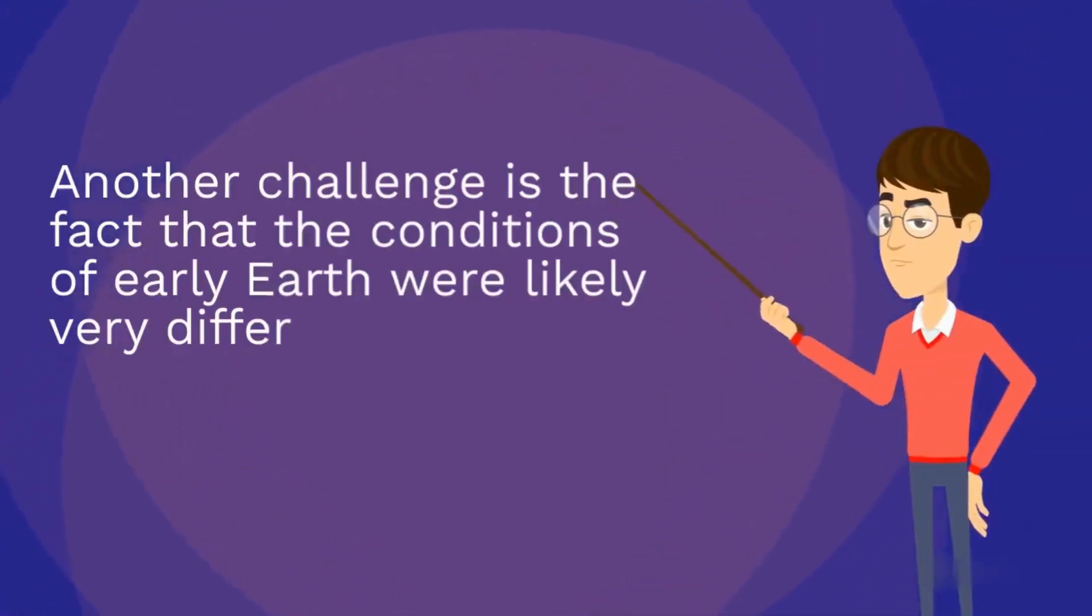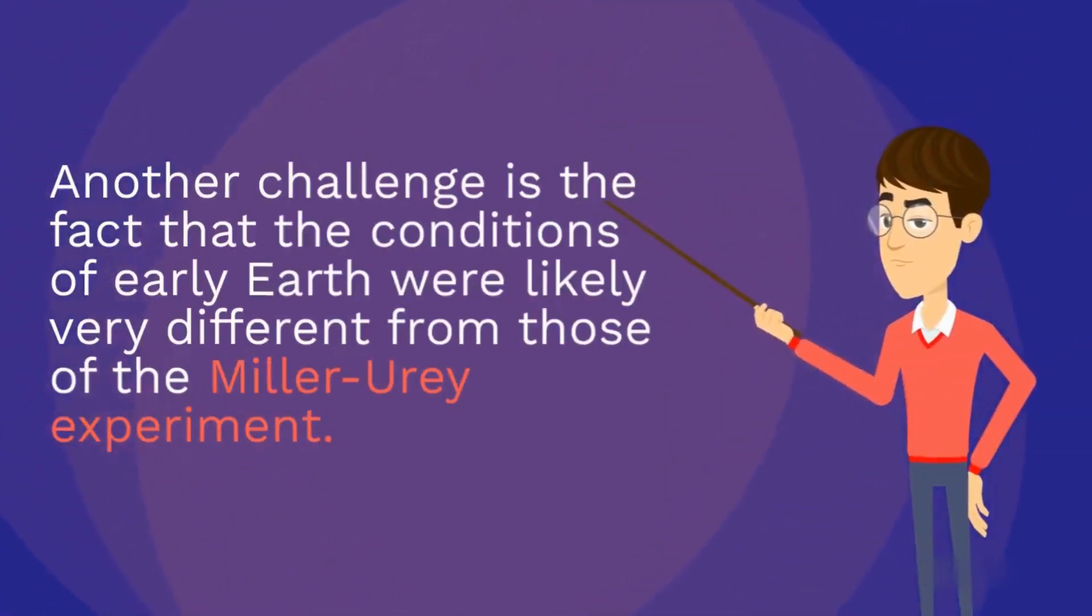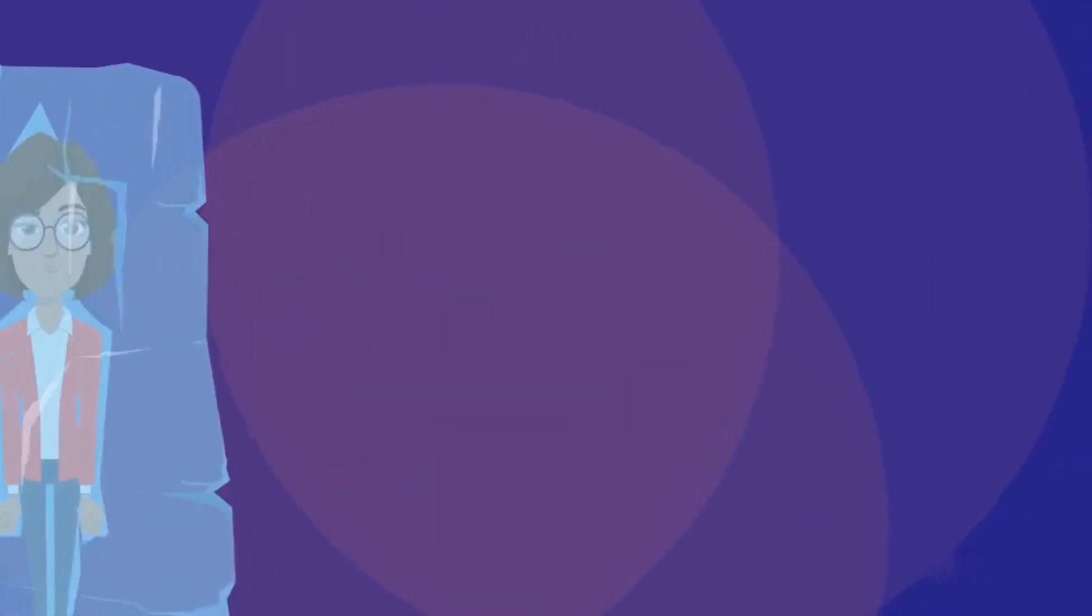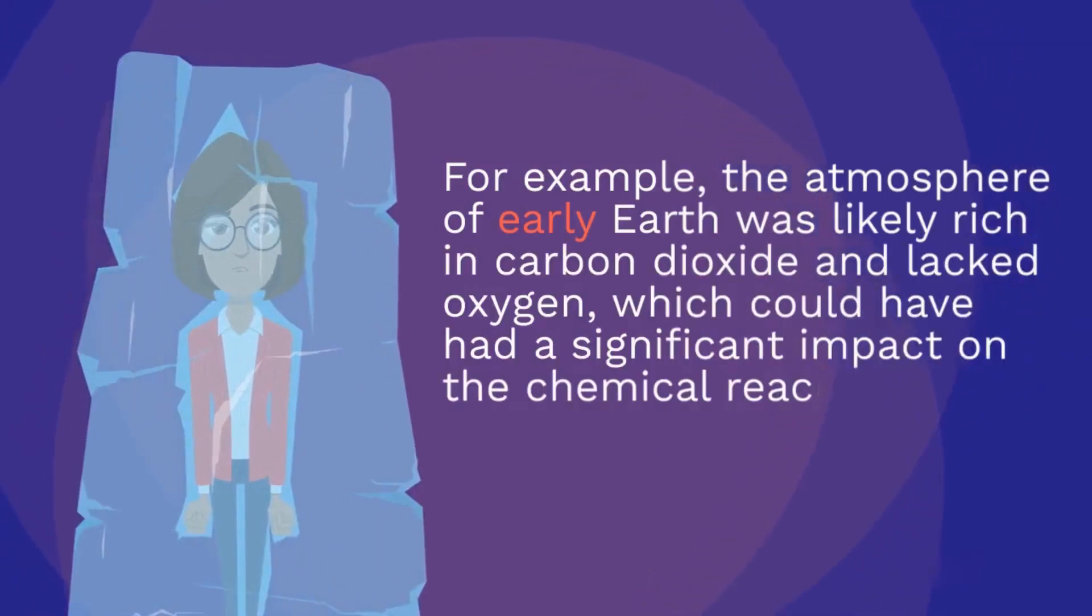Another challenge is the fact that the conditions of early earth were likely very different from those of the Miller-Urey experiment. For example, the atmosphere of early earth was likely rich in carbon dioxide and lacked oxygen, which could have had a significant impact on the chemical reactions that occurred.